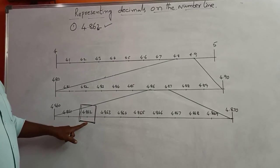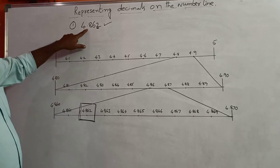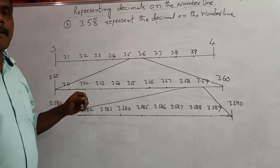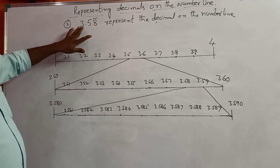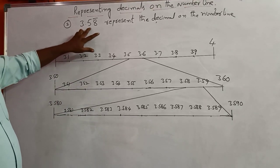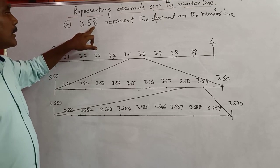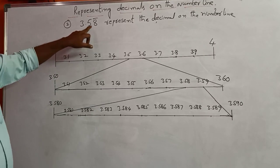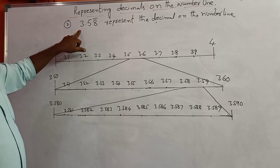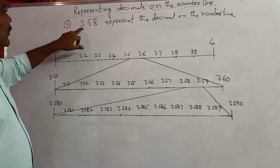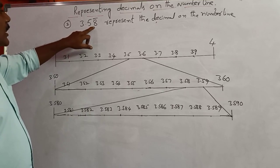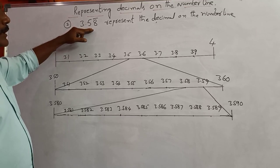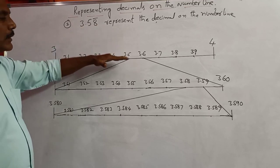This is the required decimal represented on the number line. Next, I take another decimal which is a non-terminating recurring decimal. In the previous example I took a terminating decimal. Now I take a non-terminating recurring decimal, and I will show how to represent it on the number line.